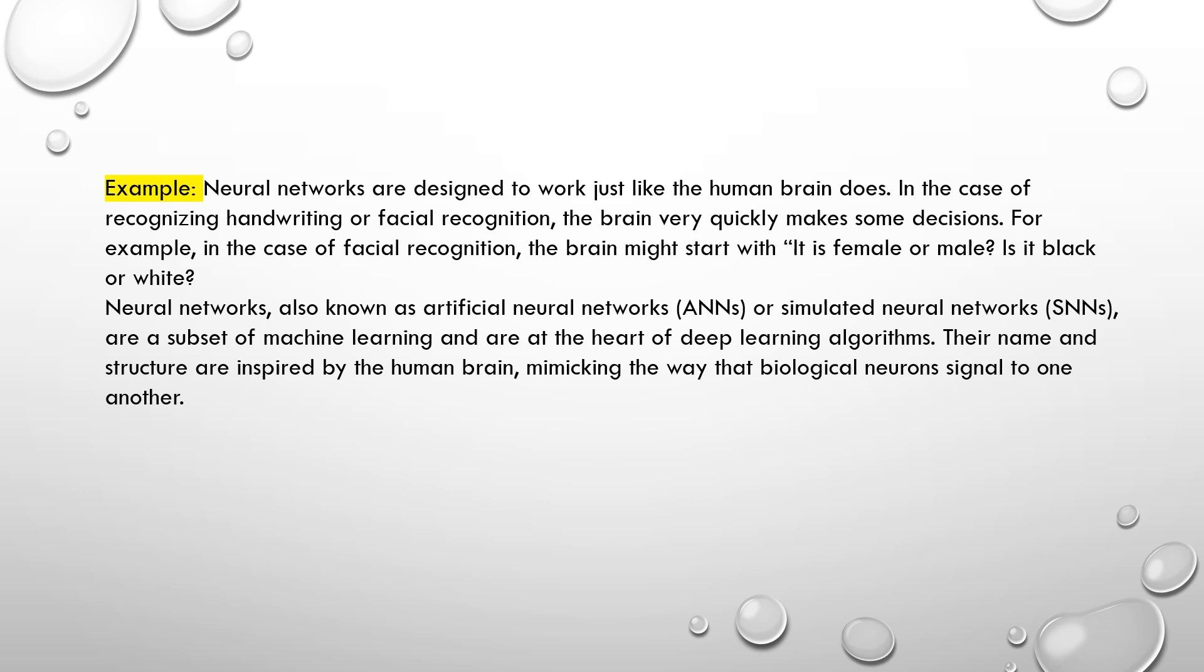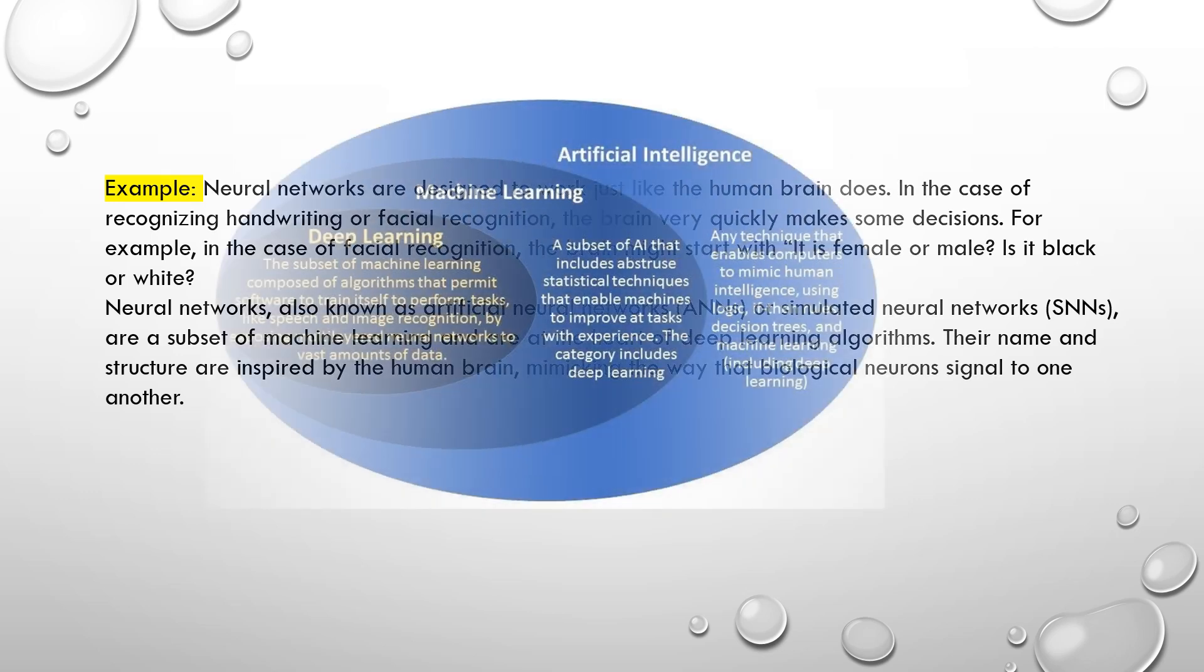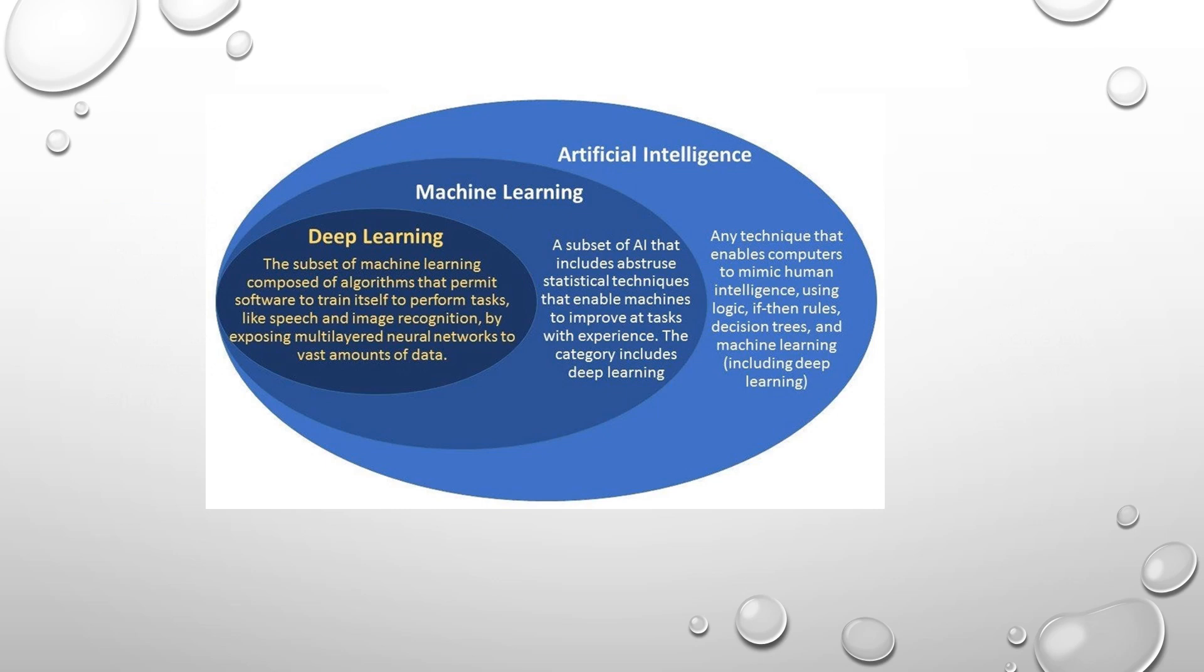The figure shows deep learning is the subset of machine learning, composed of algorithms that permit software to train itself to perform tasks like speech and image recognition. Machine learning is the subset of AI that includes abstract statistical techniques that enable machines to improve at tasks with experience. AI, artificial intelligence, are techniques that enable computers to mimic human intelligence using logic, if-then rules, decision trees, and machine learning including deep learning.